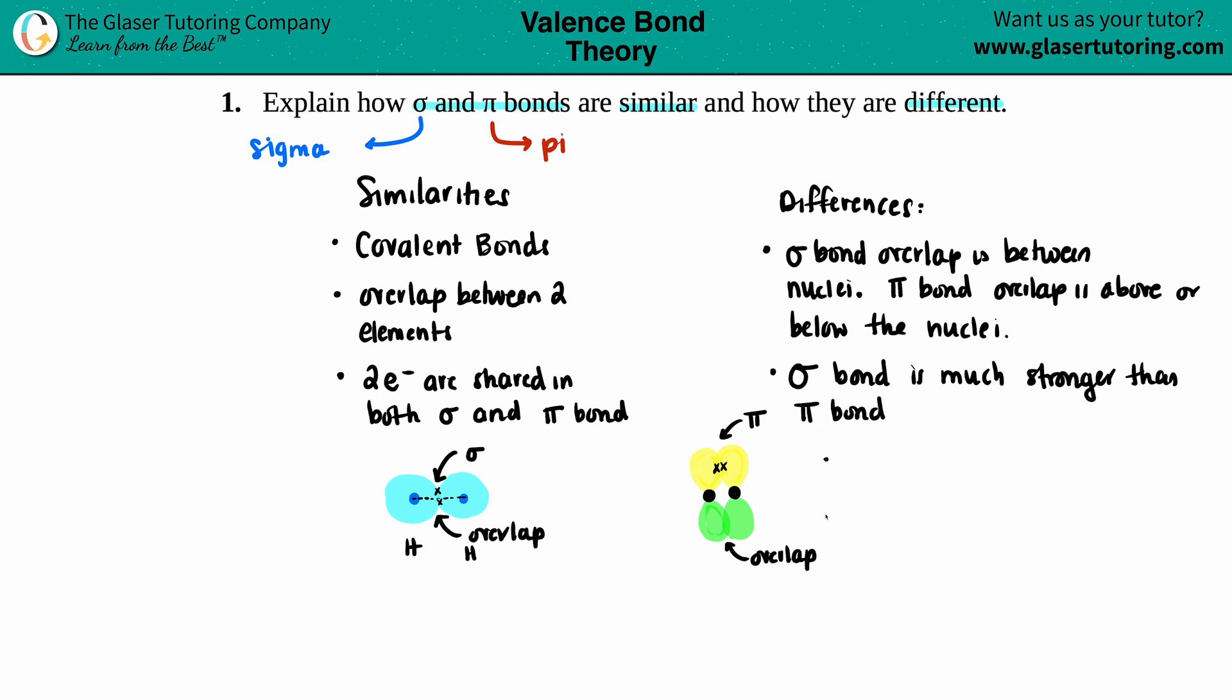And one last difference is that all covalent molecules—so it just has to be, you know, a metal and a nonmetal—but all covalent molecules have sigma bonds. That is a necessity. That's mandatory, no exceptions, but not always a pi bond. So that's the thing here. You always have to bind from nuclei to nuclei. That's the sigma bond and bonding above or below the nucleus. That's optional. So that's another difference. And I think we covered them all.